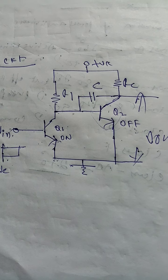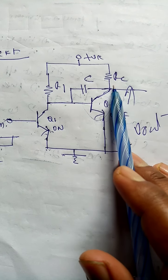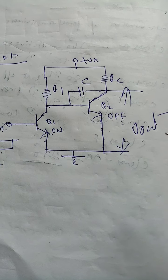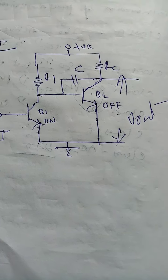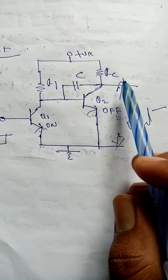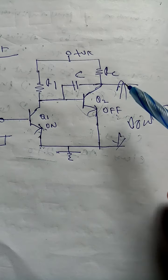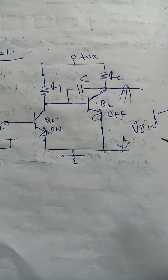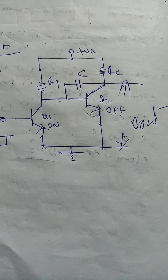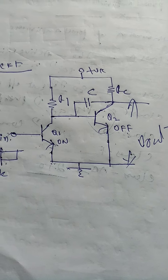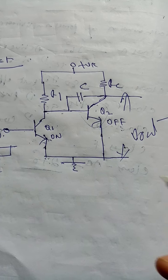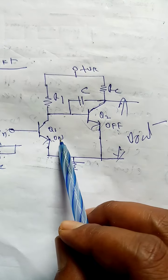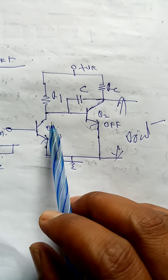We call it 'Miller' because Miller is a scientist who invented this technique. He developed how to generate the time base generator circuit — how to generate the sweep signal and ramp signal. Initially, we assume Q1 is on and Q2 is off.